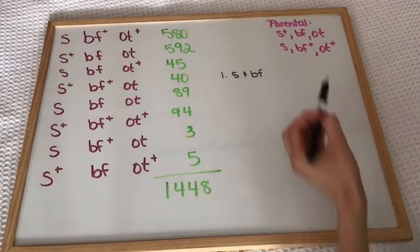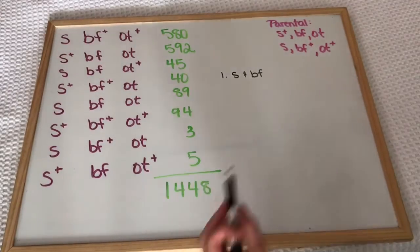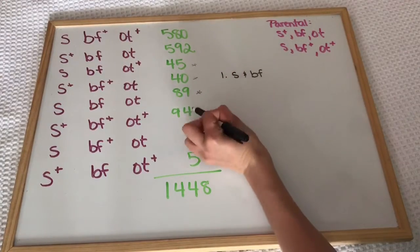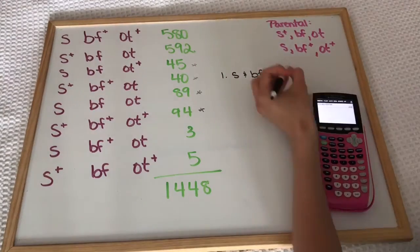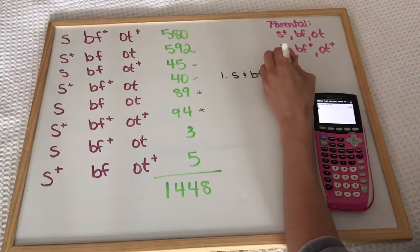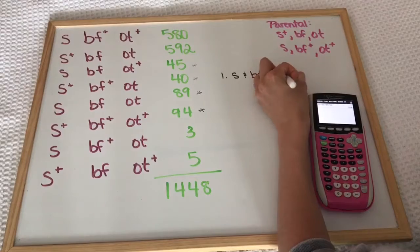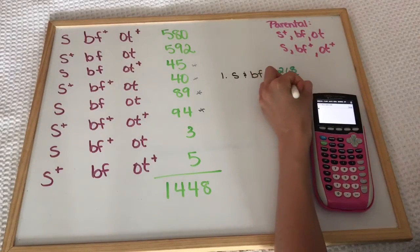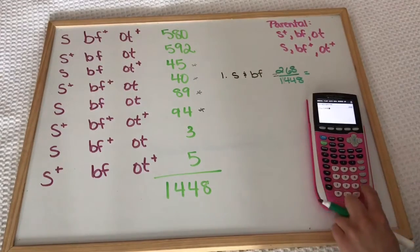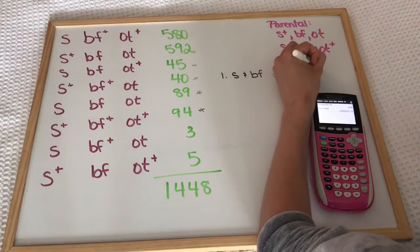To start, we have to find which combinations have recombinants in them and between which two alleles they recombined. We'll start with which combinations are recombinations between S and BF. Since the parental genotypes are heterozygous, a recombination would mean that S and BF are either both dominant or both recessive. Now that we have those figured out, we must add up all the offspring that are recombinants: 45 plus 40 plus 89 plus 94, then divide that by the 1,448 total offspring to get a recombination frequency of 18.5 map units.